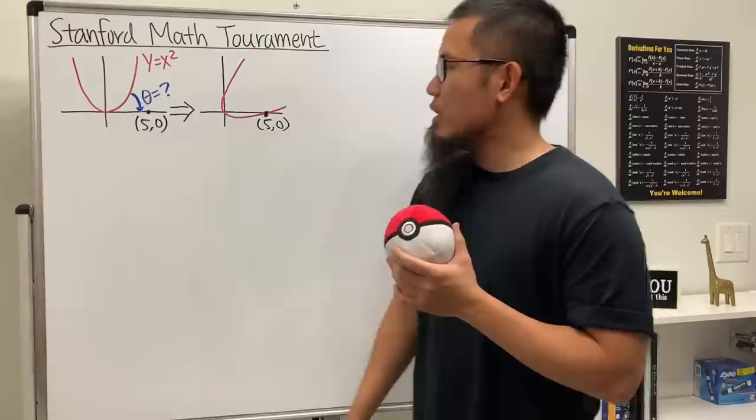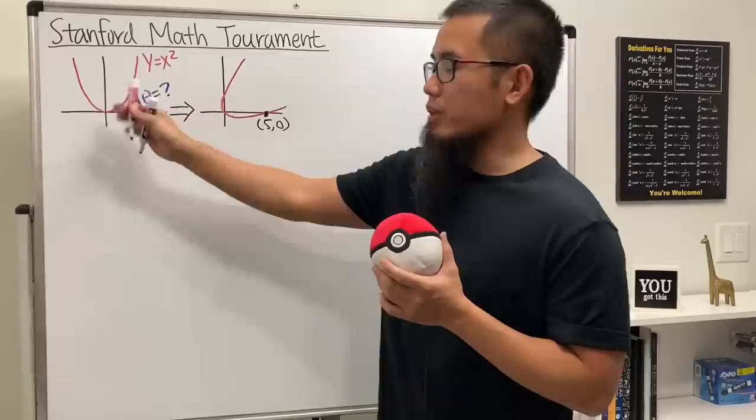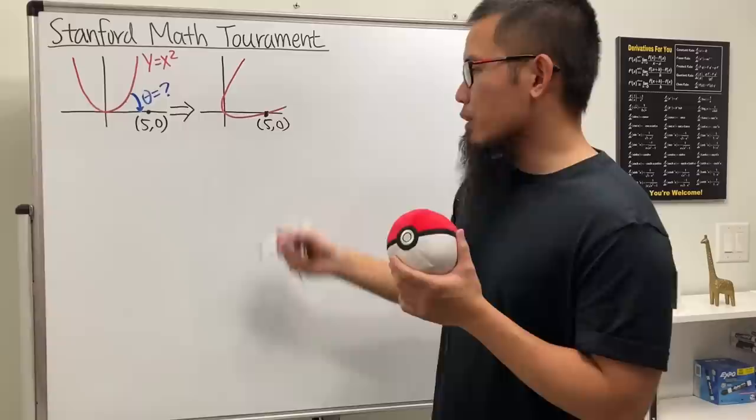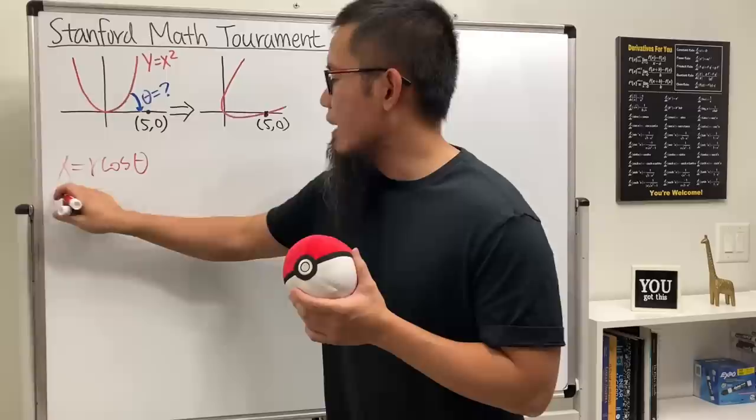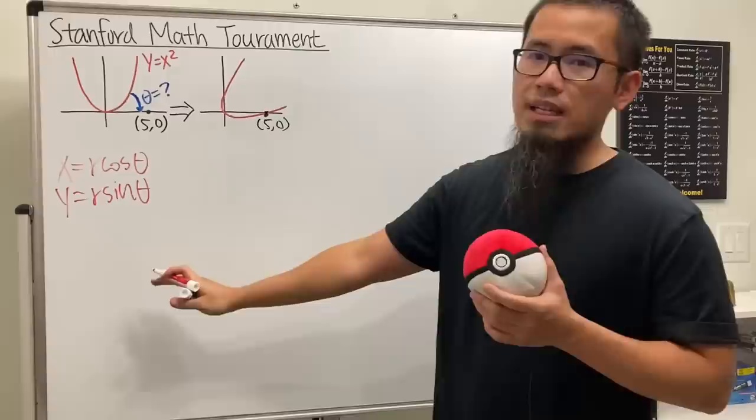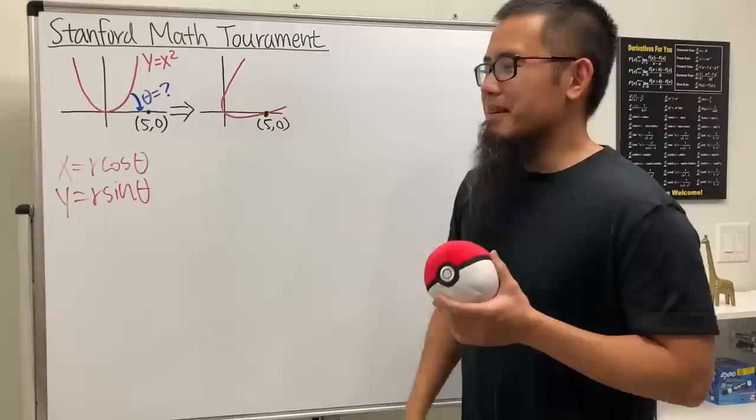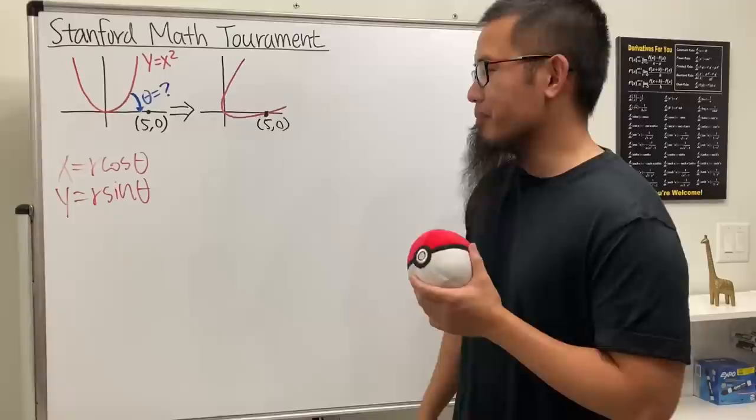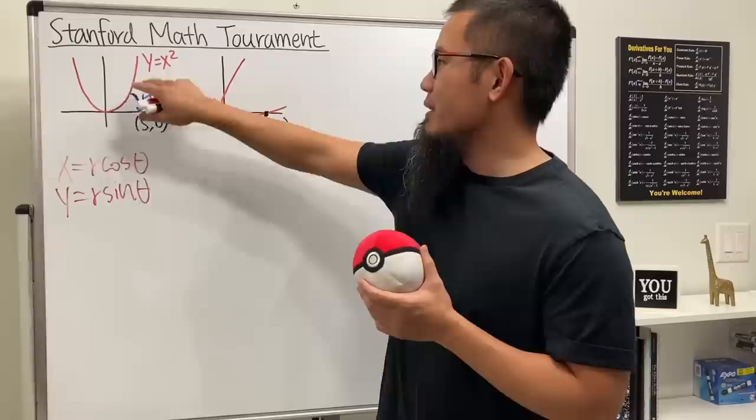Cool, I would like to tell you what I did first. Well, I first thought that because we're talking about rotations, maybe it would be a good idea to convert this Cartesian equation into its polar form. So let's go ahead and do that real quick. We know x equals r times cosine theta and y equals r sine theta.